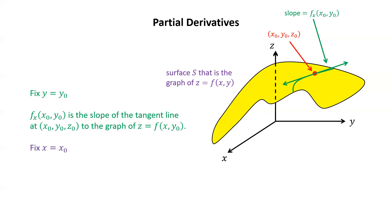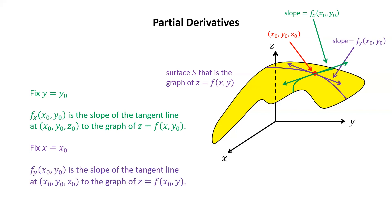Similarly, if we fix x equals x zero, we get another curve on the surface passing through the point x zero, y zero, z zero. The tangent line to that curve at x zero, y zero, z zero has slope f sub y of x zero, y zero. So f sub y at x zero, y zero is the slope of the tangent line to the graph of z equals f of x zero, y — which is just a function of the single variable y because x has been replaced by a specific value x zero.